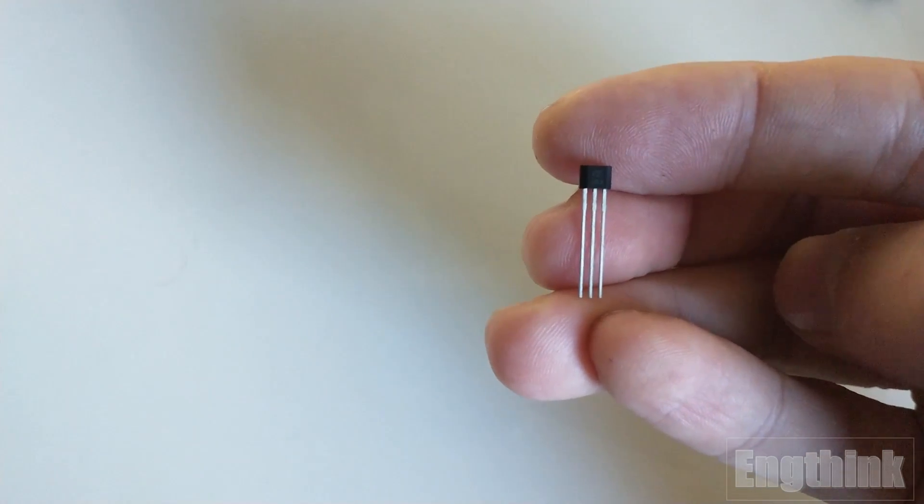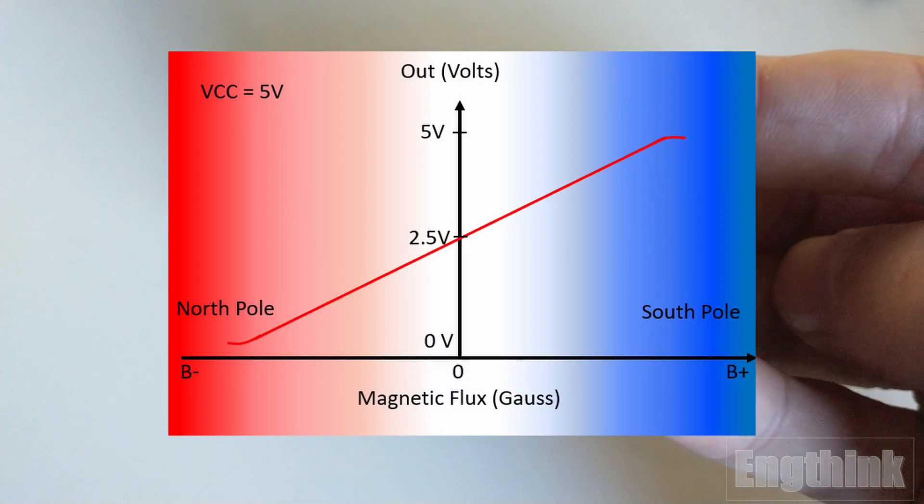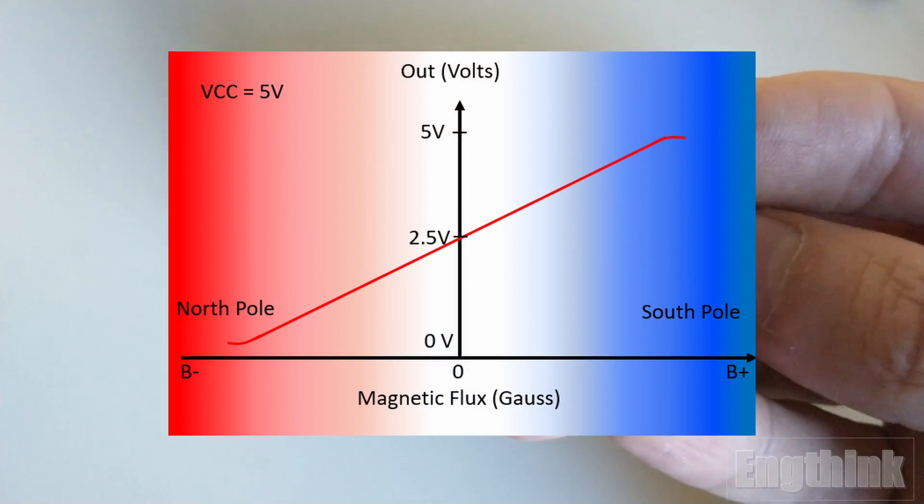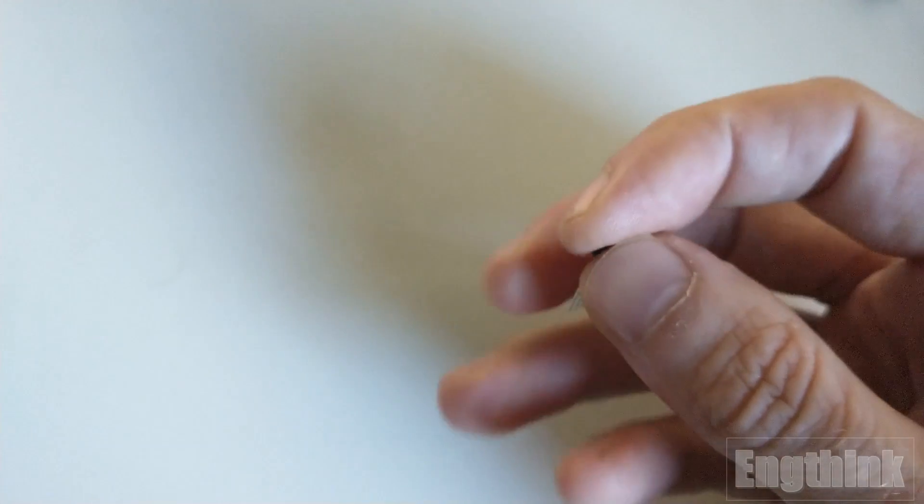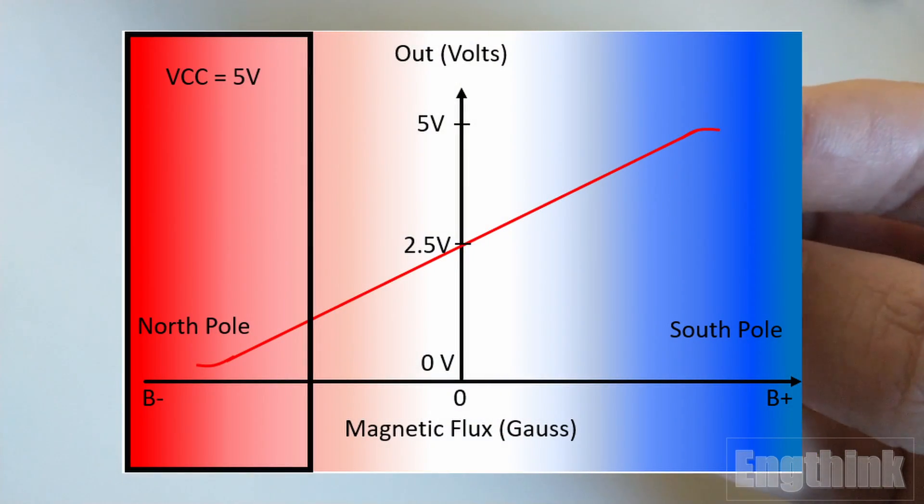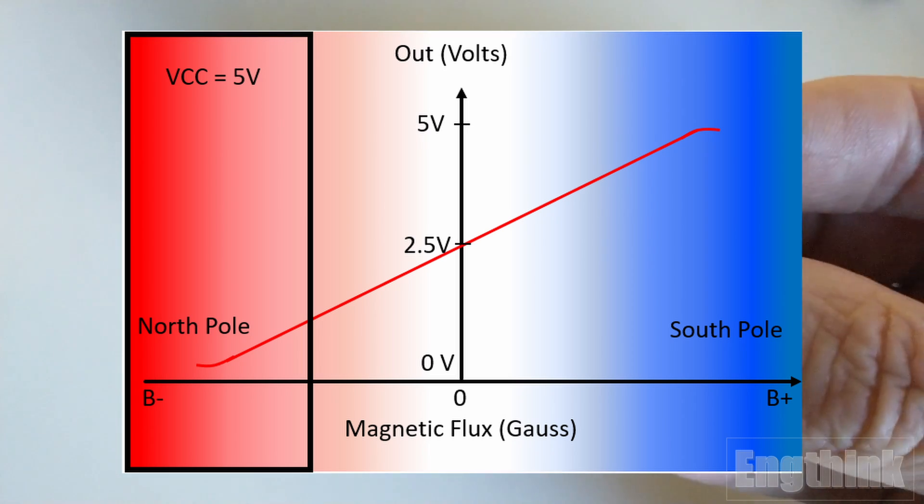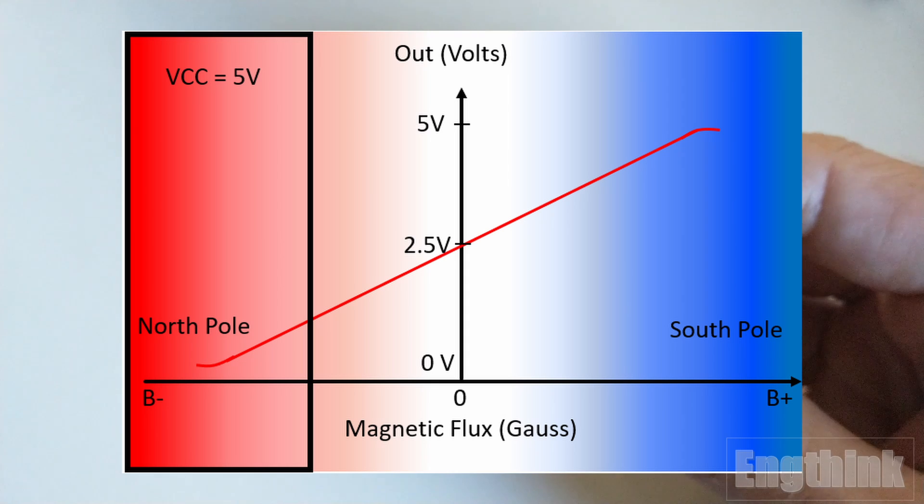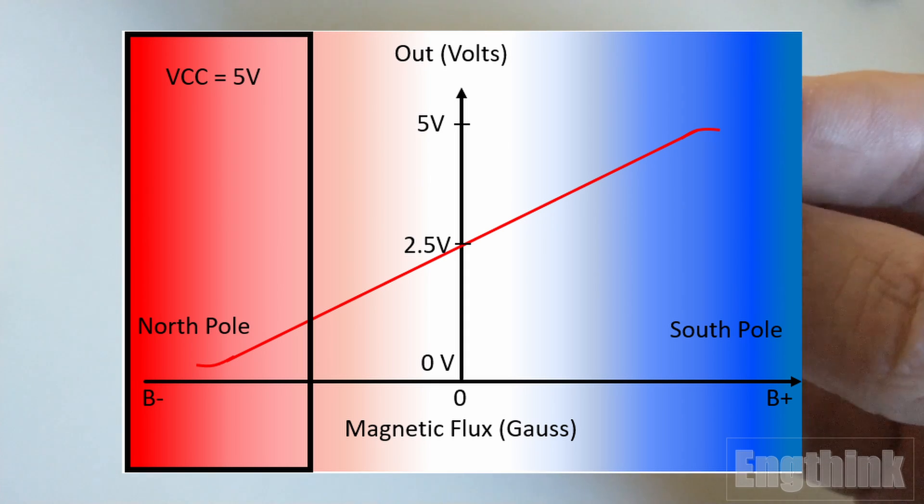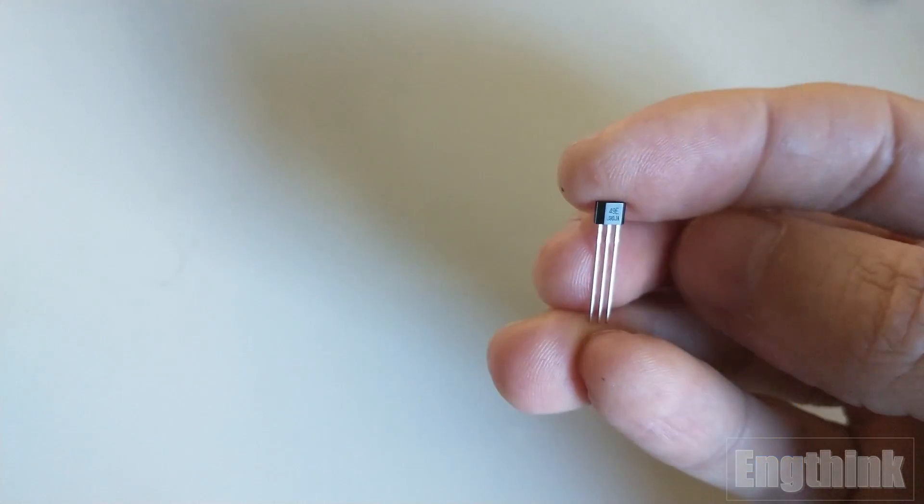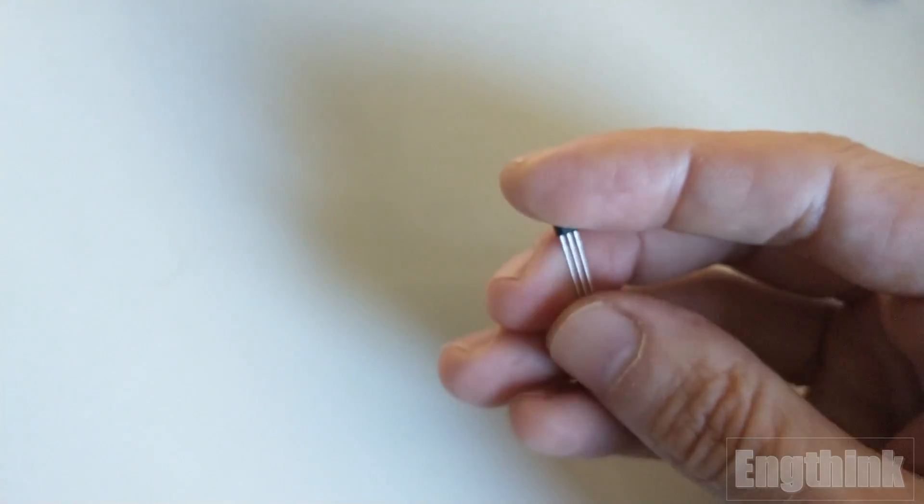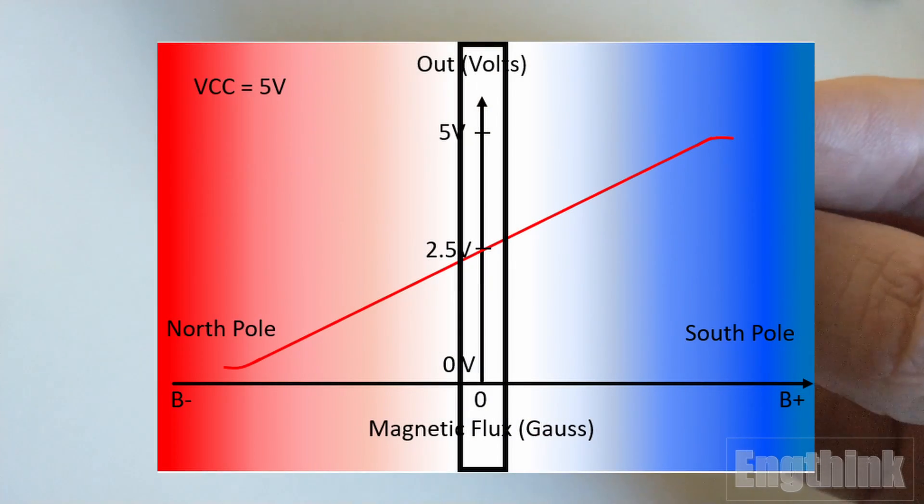Moving forward, let's analyze this graph that represents the behavior of the sensor output in relation to the magnetic flux. As you can observe in the red section of the graph, it indicates a negative magnetic flux. This is generated by the north pole of the magnet. We can note that when there is a peak in the Hall sensor detection, we observe the minimum voltage in the output. In the absence of a magnetic field, represented in the middle of the graph, we observe half of the voltage used to supply the sensor.